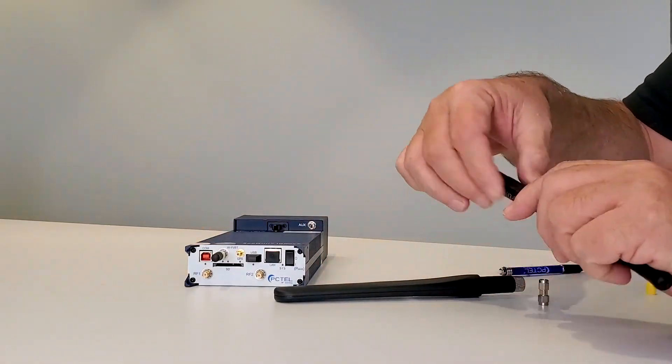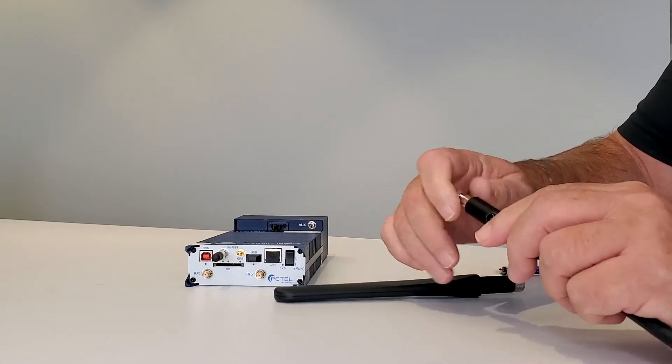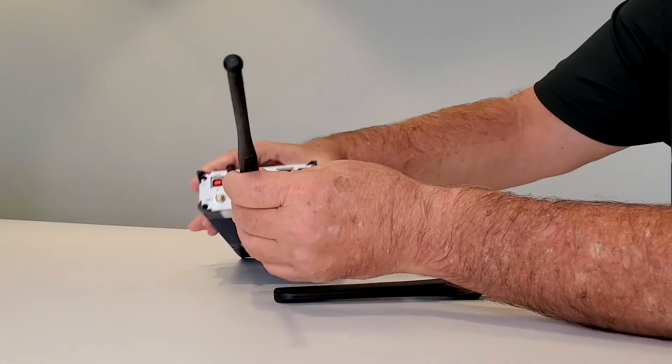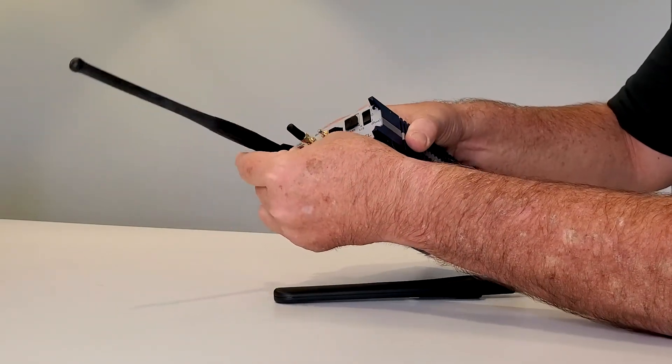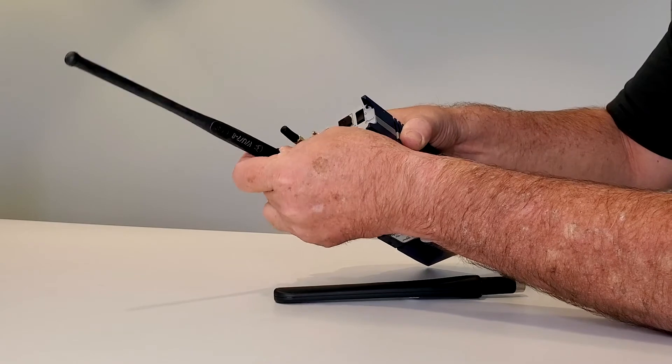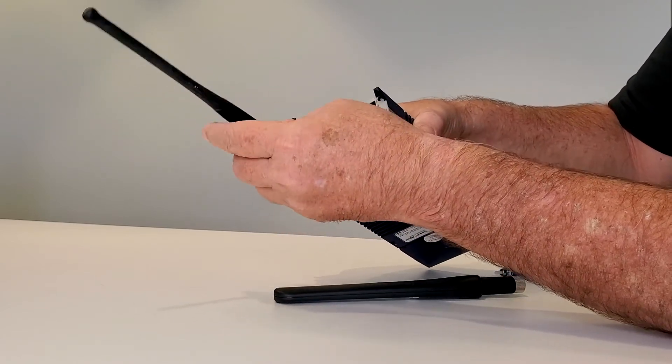My first antenna I'm going to put on there is my UHF VHF 700 800 MHz. It comes with an SMA adapter. I'm going to place that on RF1. And again, we just want to get that on there finger-tight.